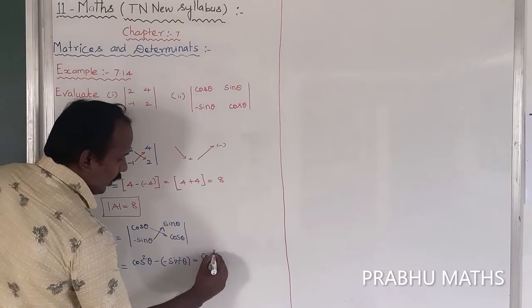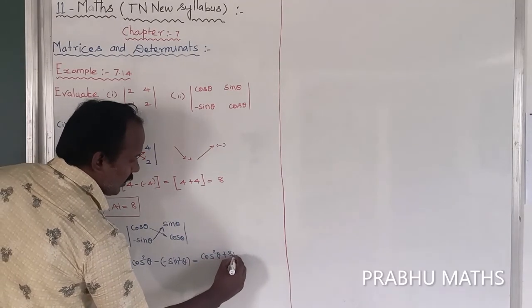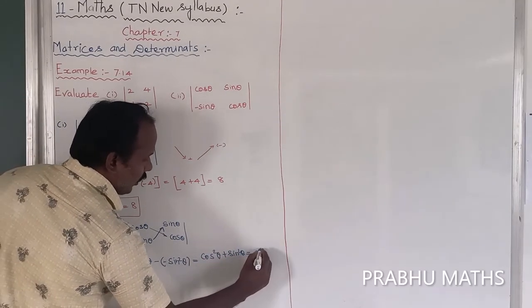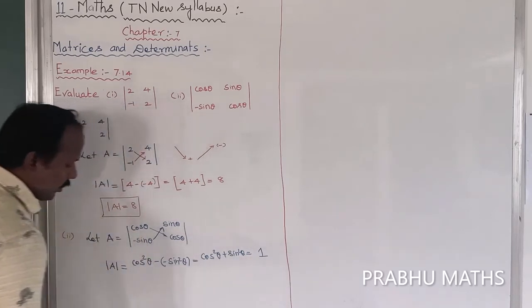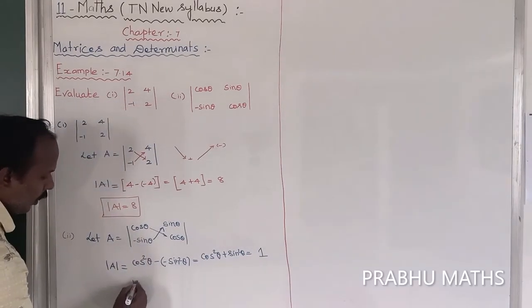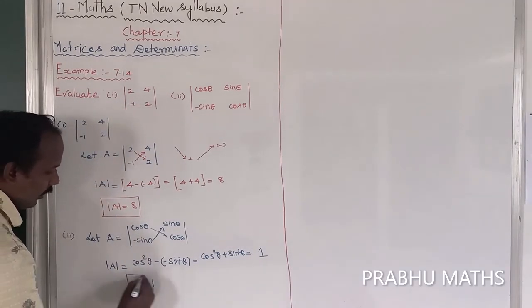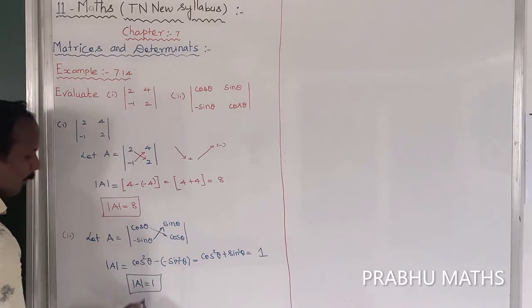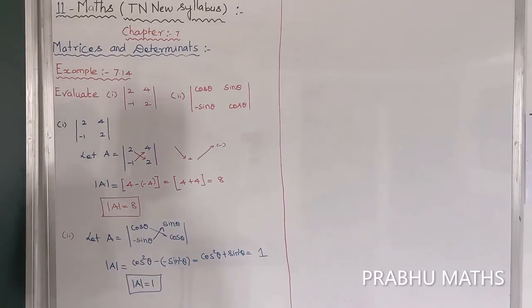So that is equal to cos squared theta plus sin squared theta. Now cos squared theta plus sin squared theta equals 1. The modulus of A, that is the determinant of A, is equal to 1.